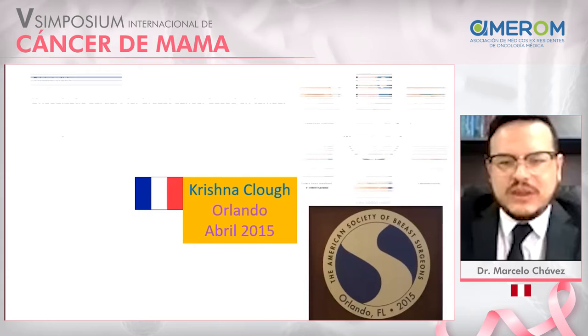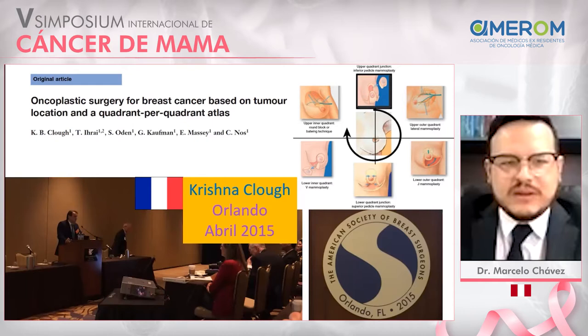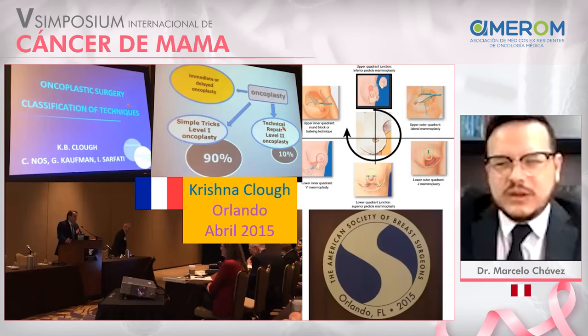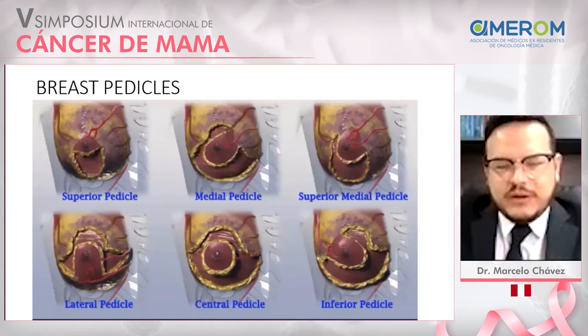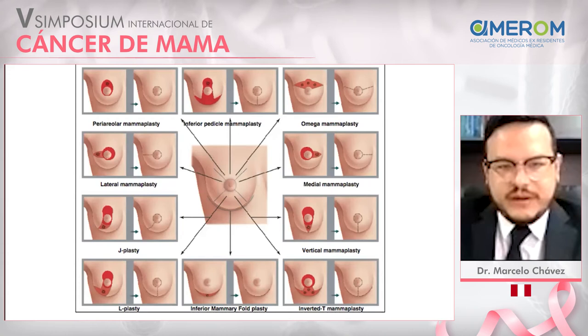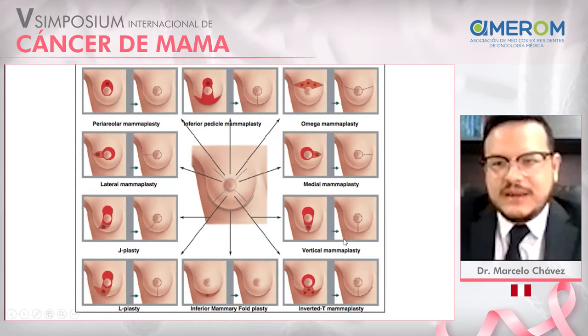In 2015, Krishna Klaas at the Congress of Orlando taught us about oncoplastic surgery at level 1 and level 2. He said that level 1 can solve 90% of breast cancer cases, and only 10% need level 2 oncoplastic. For a breast surgeon performing oncoplastic surgery, it is very important to know blood supply in order to choose breast pedicles and make surgery safer. We have different mammoplasty approaches that help us resect every part of the breast and remodel it with good cosmesis.